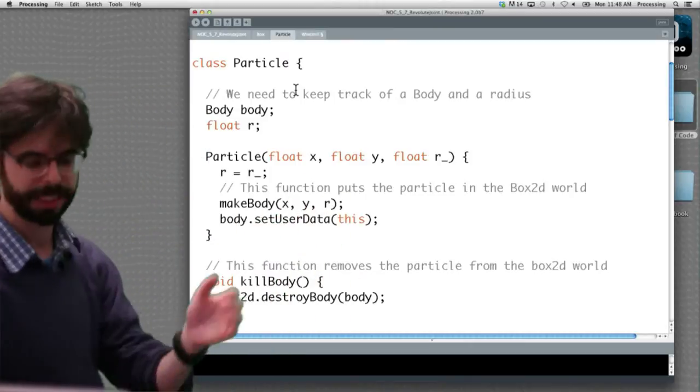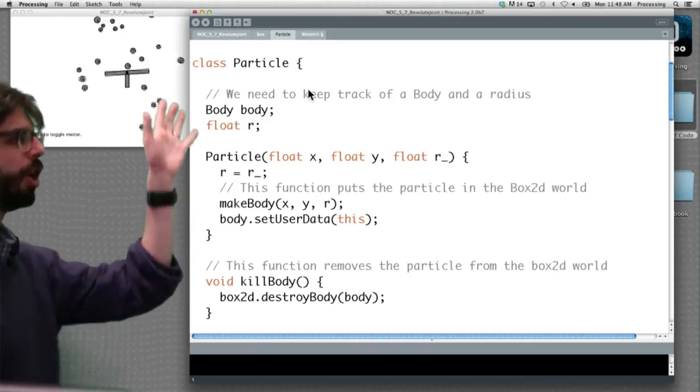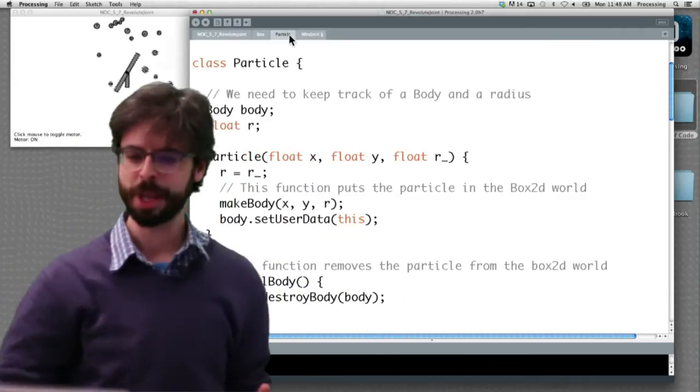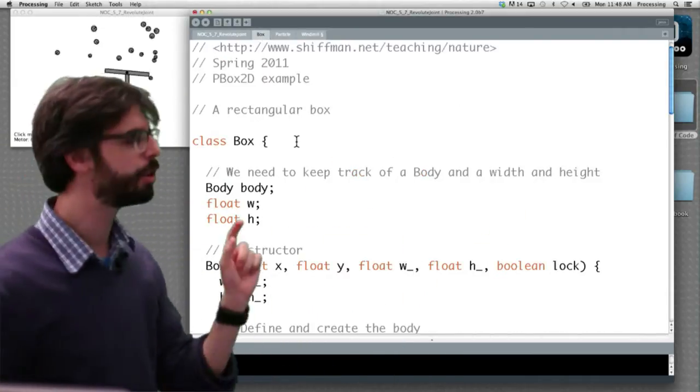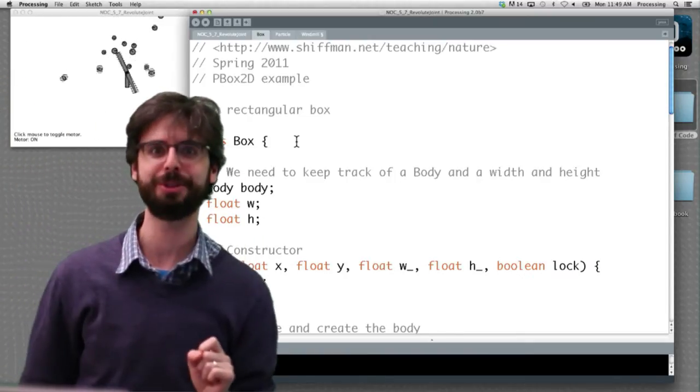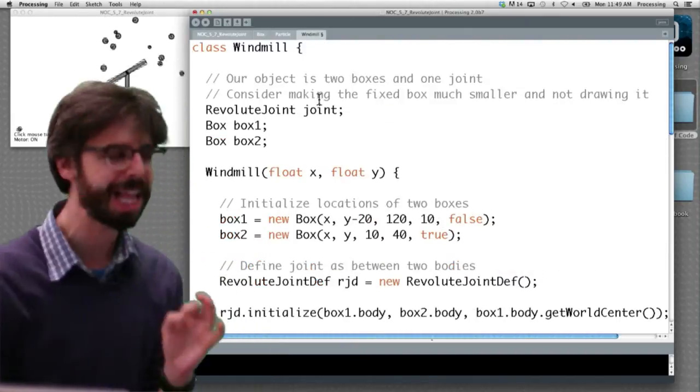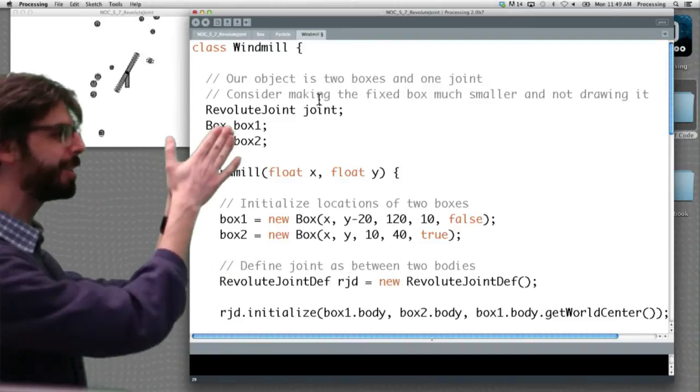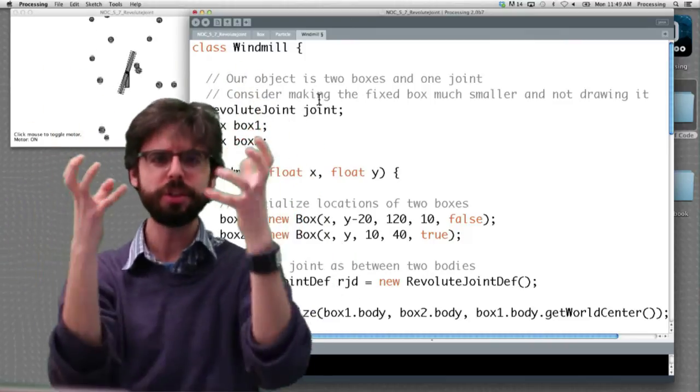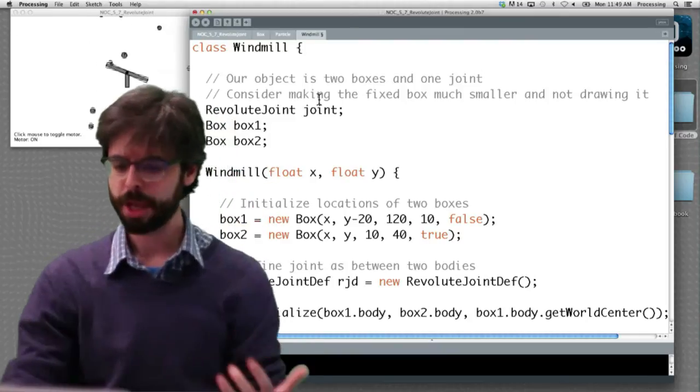So what's going on here in this example? One thing I should point out is we have a particle class, and let me move this off to the side here. We have a particle class which is all those circles. That's the object that controls the Box2D circular body that's falling from the sky. We have this box class which describes a box, which is used for both of these bodies that are connected with that revolute joint. So then we're doing the same thing we did in the distance joint example where we have a class. This class has a reference to two box objects and a joint. So we're using a class to describe a multitude of Box2D bodies. We say like every time we want a windmill, we need this box and this box and a joint that connects them.